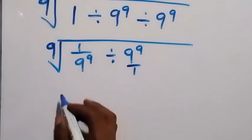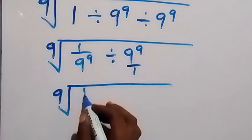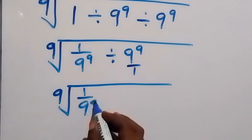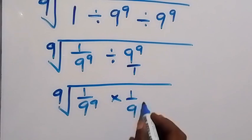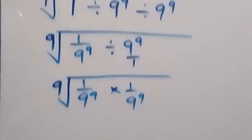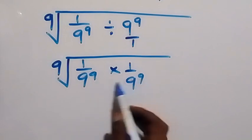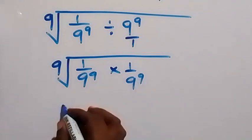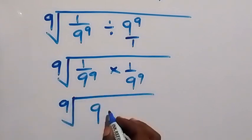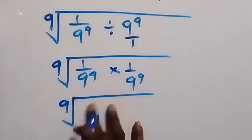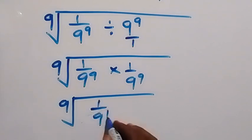So we have ninth root of 1 over 9^9, then we multiply by 1 over 9^9. Now, from here, since these multiply, then we can add the power. So we have ninth root of 1 over 9^18.